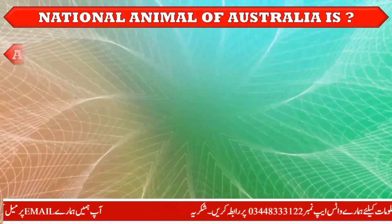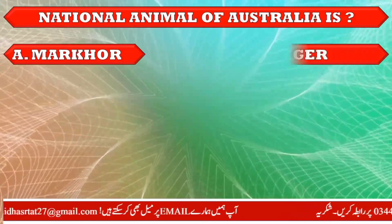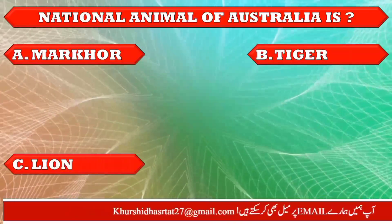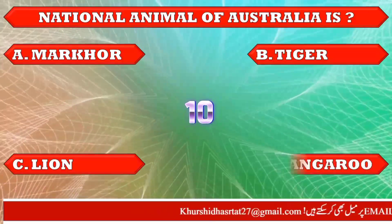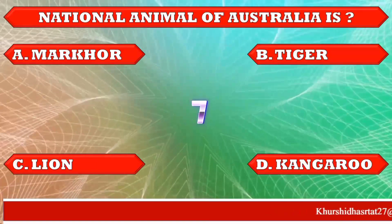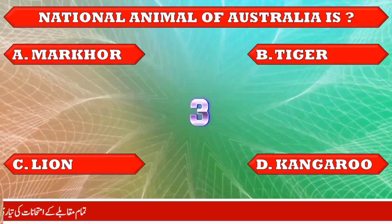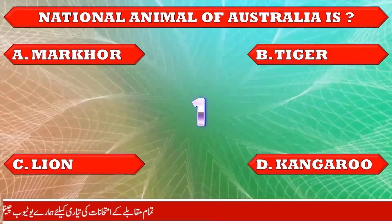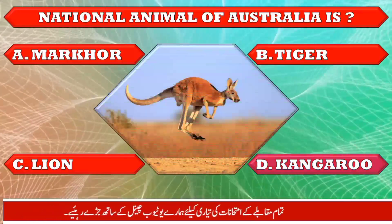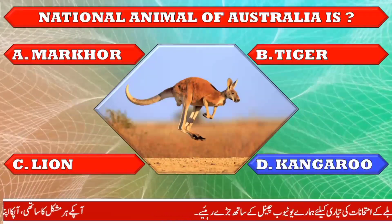National animal of Australia is: A. Markhor, B. Tiger, C. Lion, D. Kangaroo. The right answer is option D. Kangaroo.